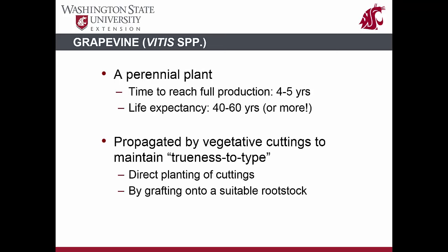Before proceeding further, let's remember some facts about grapevines. First, grapevines are perennial, meaning they can live for many years. Once planted, it takes four to five years for grapevines to reach full production, at which point they can remain highly productive for decades with proper canopy and pest and disease management.